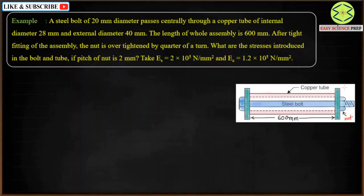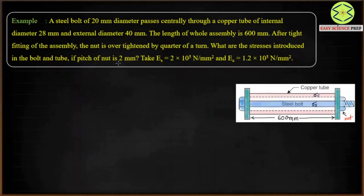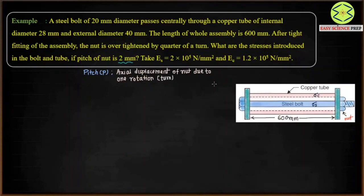Initially the steel bolt and copper tube are free from any stress. When you tighten the nut, the steel bolt will be elongated, so there will be tensile stress in the steel bolt. Whereas when you rotate the nut, the copper tube will be compressed, so there will be compressive stress in the copper tube. The significance of pitch: whenever you rotate the nut during one complete rotation, the nut moves axially — that axial displacement due to one complete turn is called the pitch.